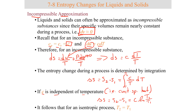If we have an isentropic process, it follows that T2 equals T1, and that relation will yield an entropy change of zero.